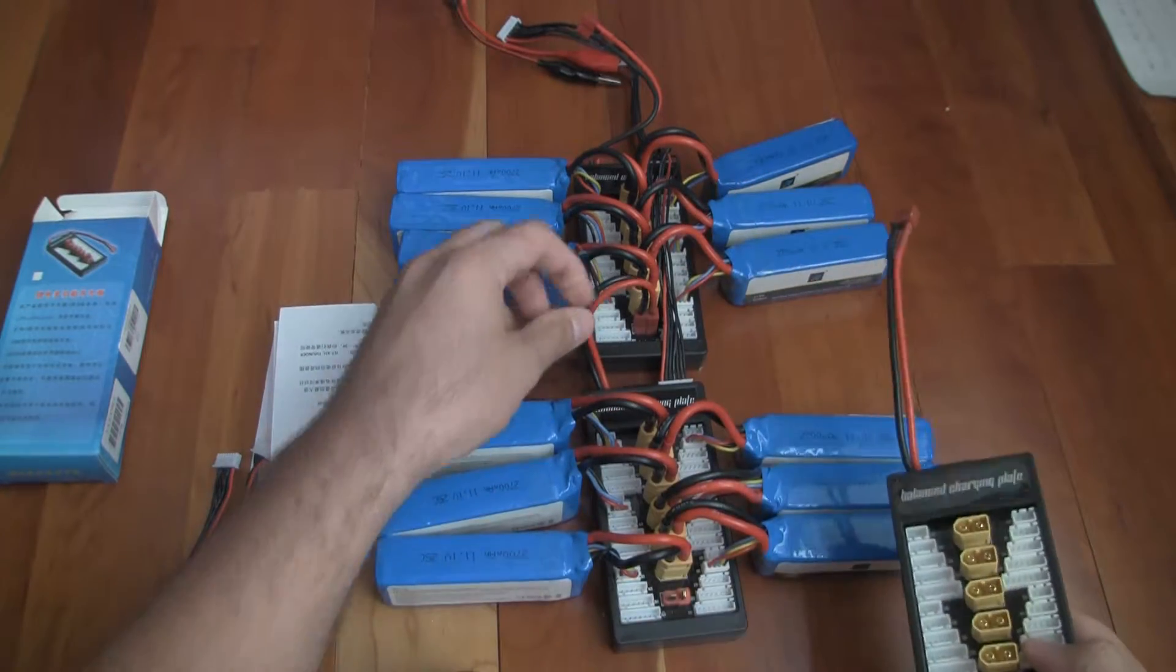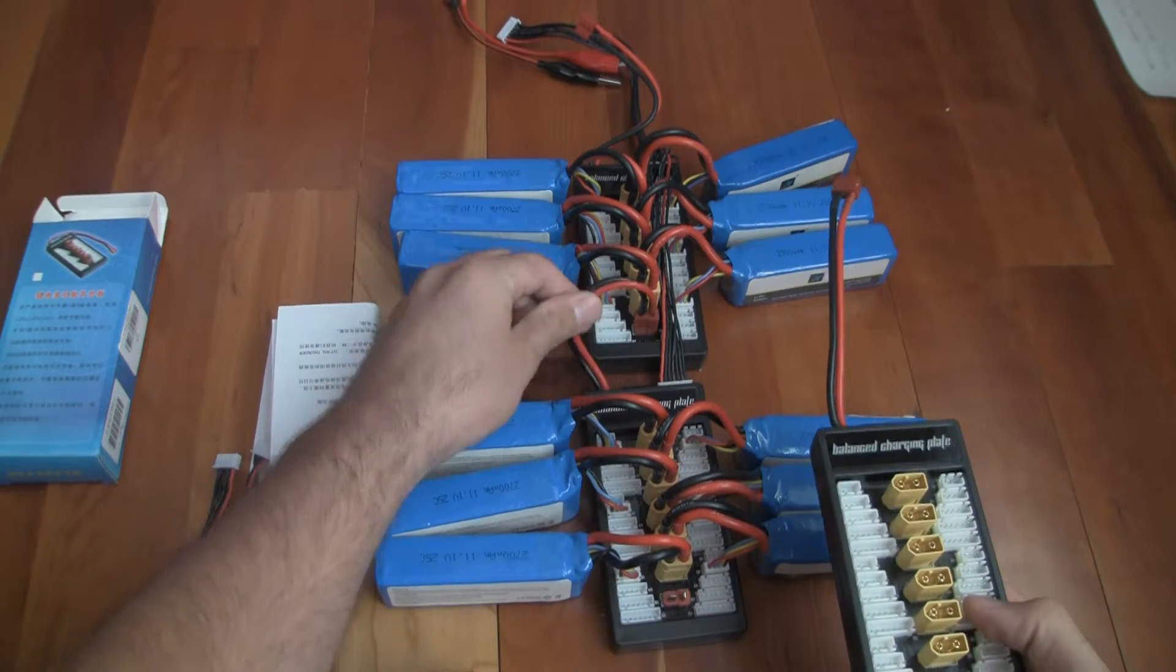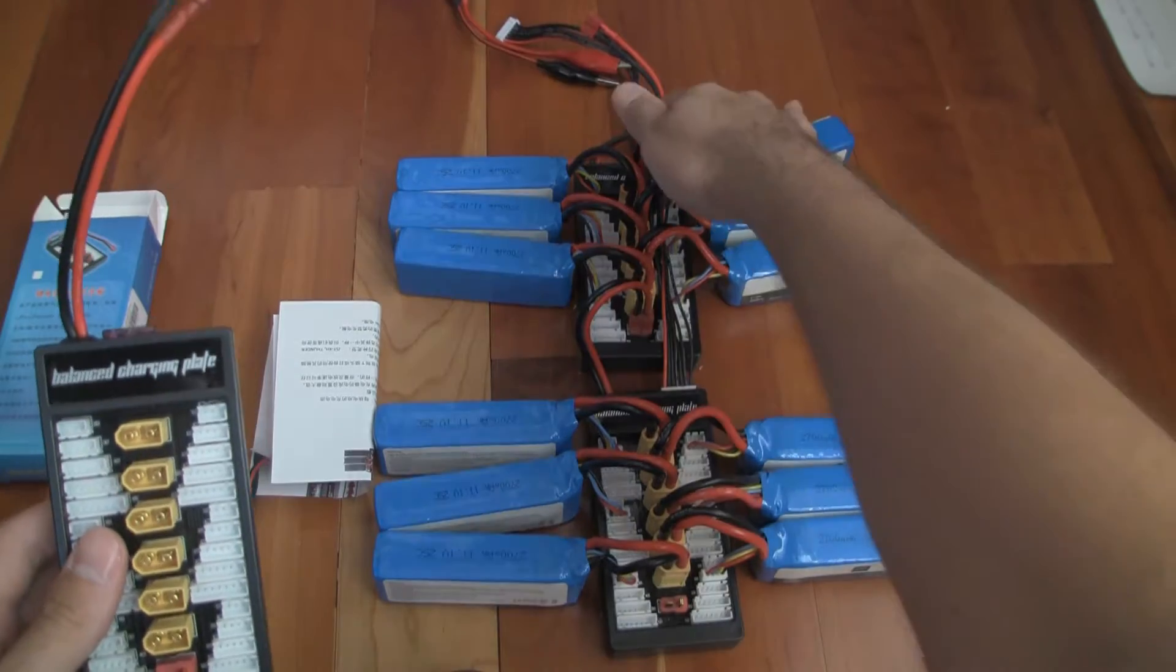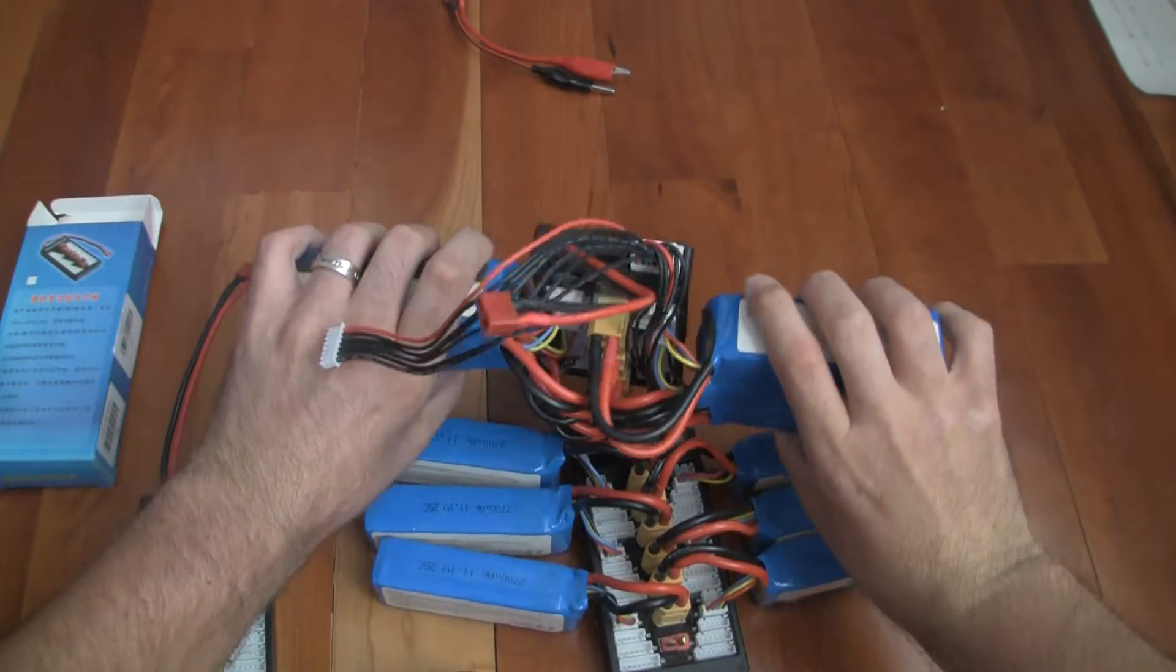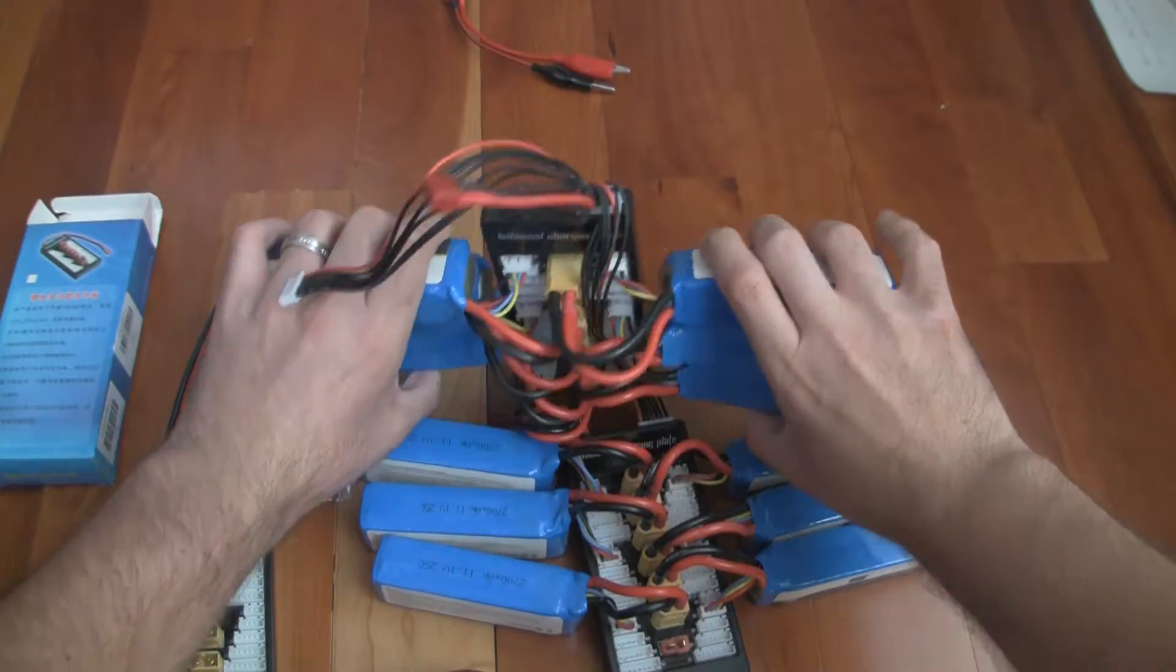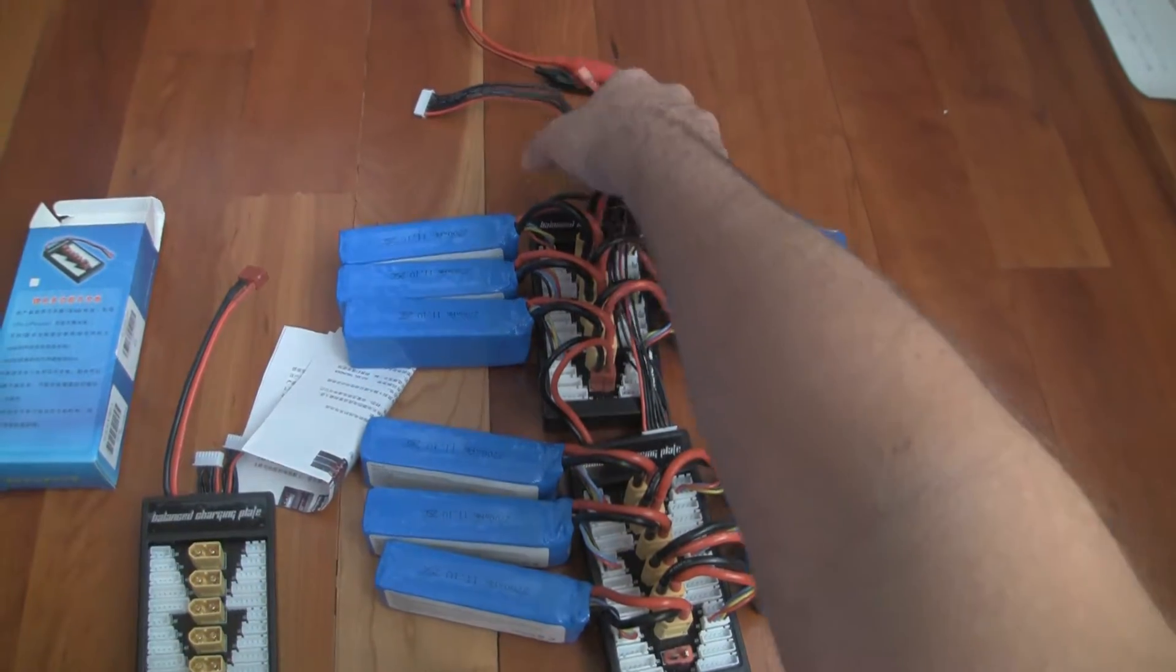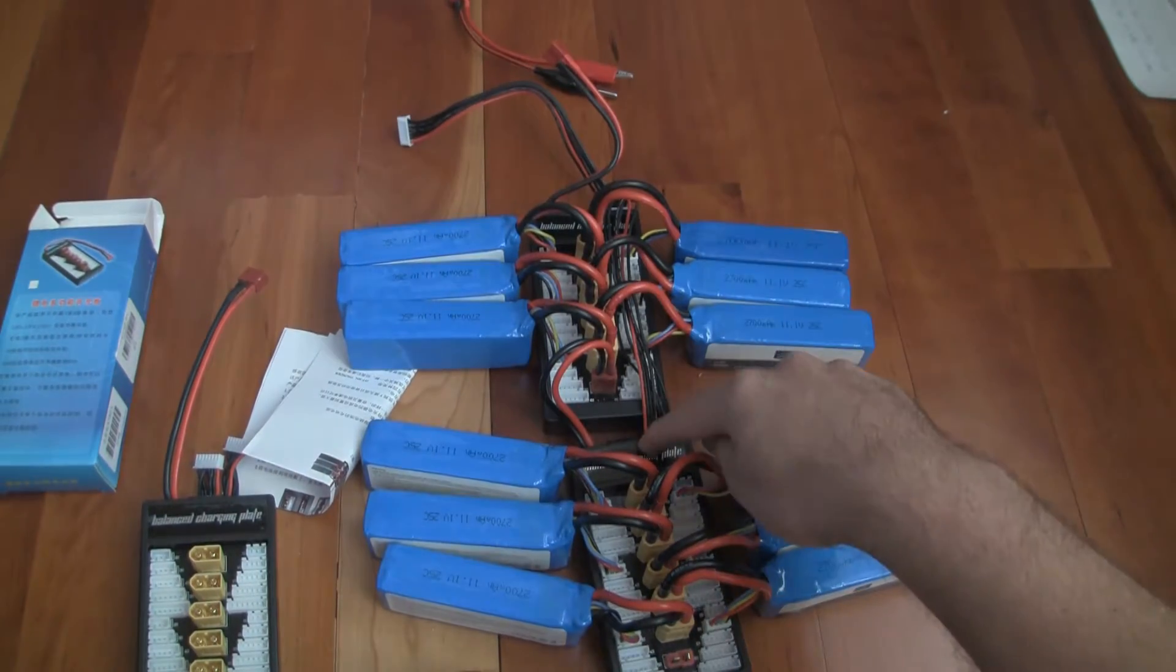As you can see, the Deans plug from one connects to the Deans plug of another. And then the balance lead comes from the balance lead of this one. I'm going to pick this up and show you - there are two balance cables there. One of these is going to go to the LiPro charger, and this balance lead is going to go to the charger, and then the next one goes there.